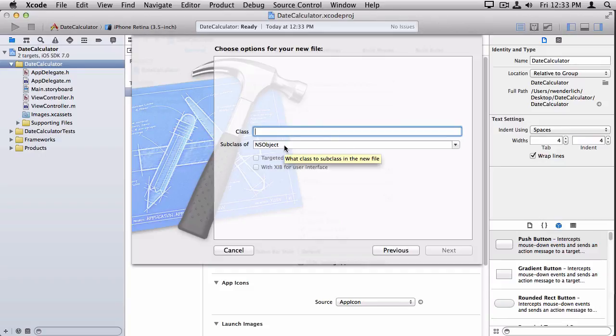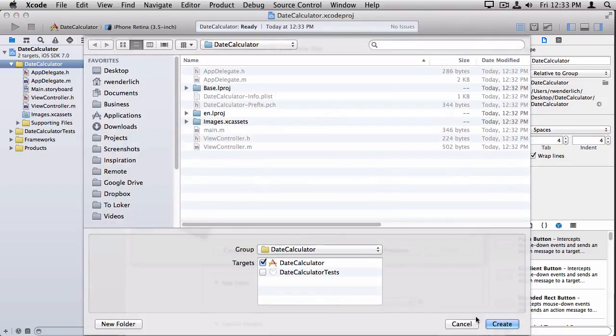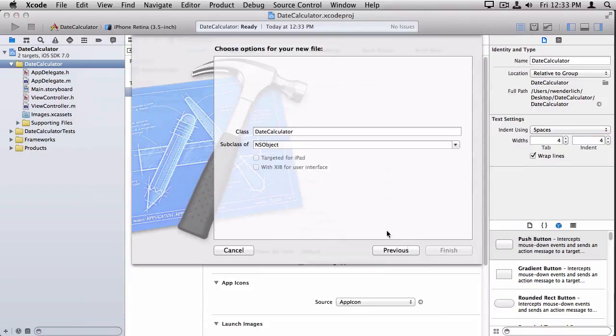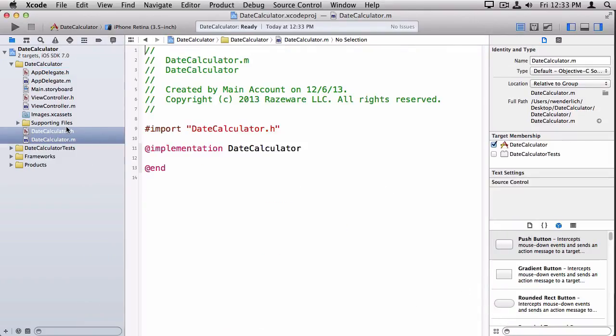...and you can choose iOS Cocoa Touch Objective-C class. It's a good starting point. And this lets you specify the class and the subclass. So we're going to name the class DateCalculator. And we don't have anything in particular we want a subclass from, so we might as well just leave it to NSObject. And it says, where do you want to save it? We'll just save it to the default spot in the project folder.